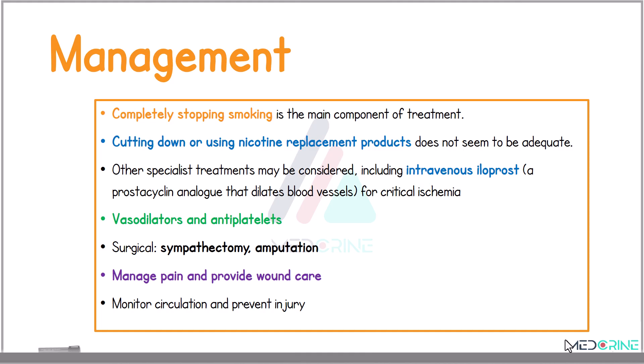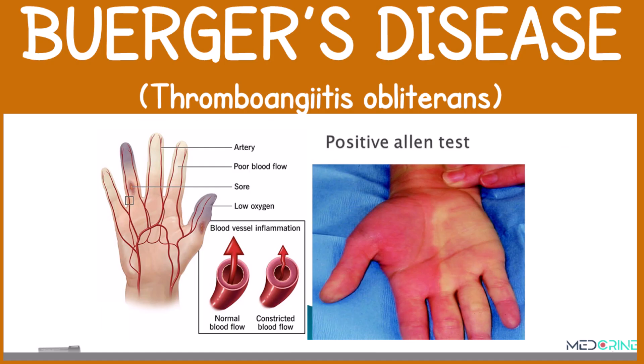In severe cases, surgical intervention — for example, sympathectomy or amputation — may be required. Pain management, proper wound care, monitoring of circulation, and prevention of further injury are essential components for long-term treatment of Buerger's disease.